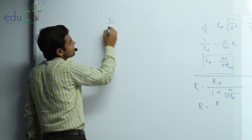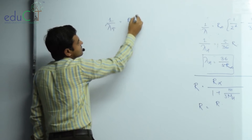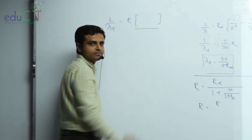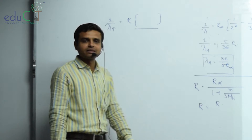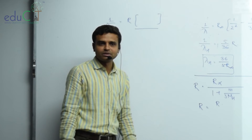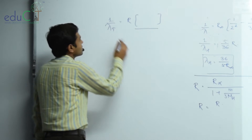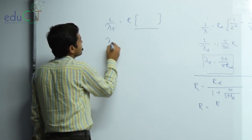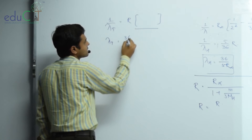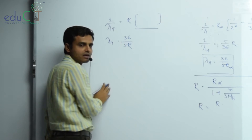1 upon lambda of TSM equals R_TSM times (1 upon 2 squared minus 1 upon 3 squared). So lambda of tritium L equals 36 by 5R_TSM.